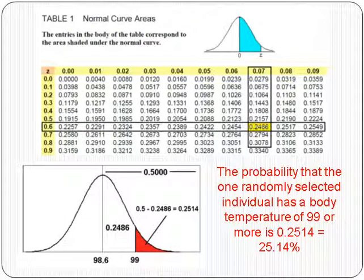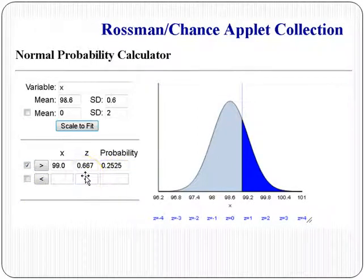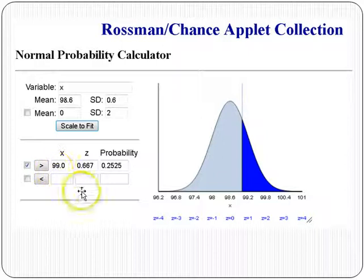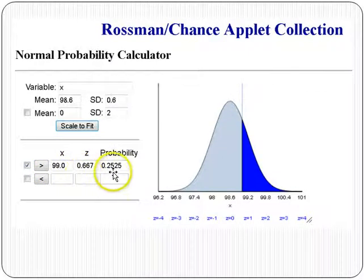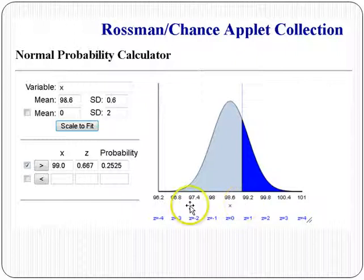To check, you can use the Rossman-Chance applet. The probability from the applet is slightly different because it's more accurate. With mean 98.6 and standard deviation 0.6, the probability of being greater than 99 gives a Z-score of 0.6667 and a probability of 0.25. The Z-score means the temperature of 99 is about two-thirds of a standard deviation greater than the mean.